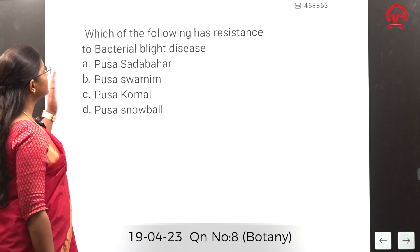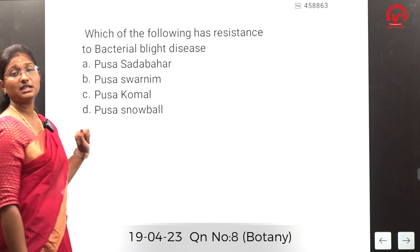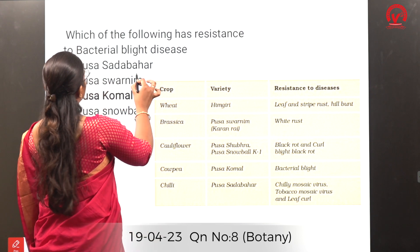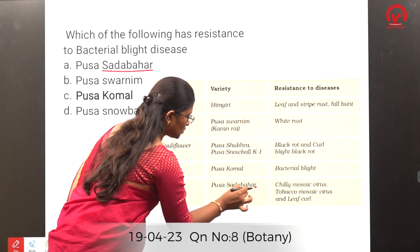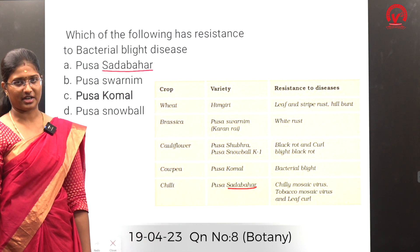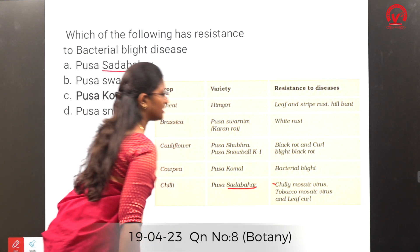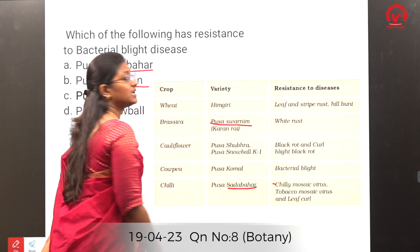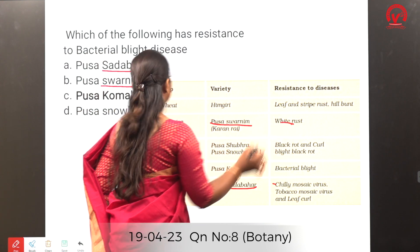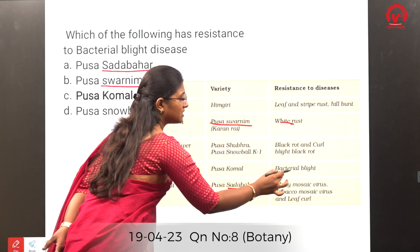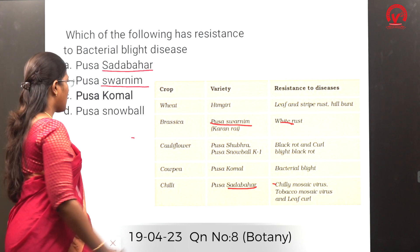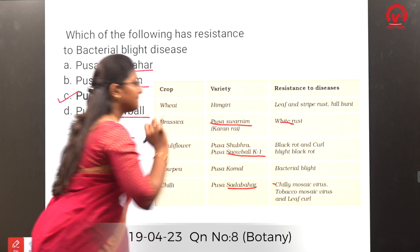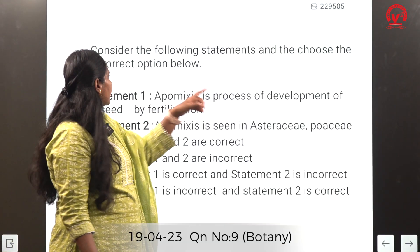Which variety has resistance to bacterial blight disease? Sadabahar is resistant to TMV, leaf curl, and chili mosaic virus. Swarinim is resistant to white rust. Pusa Komal has the gene providing resistance to bacterial blight disease, so the answer is C. Pusa Snowball is resistant to black rot and curl blight disease.